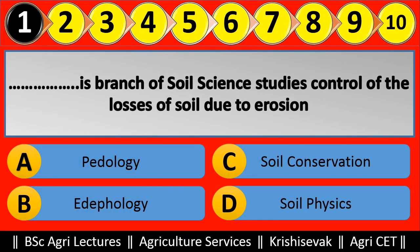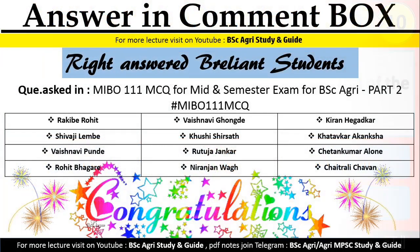Question 1: Blank is the branch of soil science that studies control of the losses of soil due to erosion. Options are: (a) Pedology, (b) Edapology, (c) Soil Conservation, (d) Soil Physics. This branch deals with studying how to prevent losses due to soil erosion. Answer this question in the comment box.